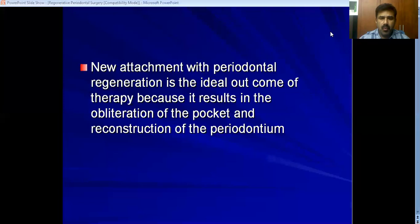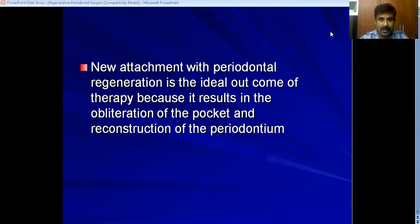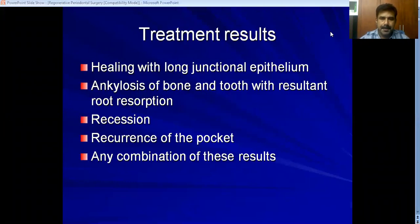We need to understand certain terminologies like new attachment and re-attachment. As a result of periodontal disease, the root becomes devoid of periodontal ligament. When new periodontal ligament comes and attaches to newly formed cementum on the root surface, that results in obliteration of the pocket — that is the new attachment, and that is the result we all want. But after periodontal surgery, you may not always achieve complete regeneration of all the tissues.